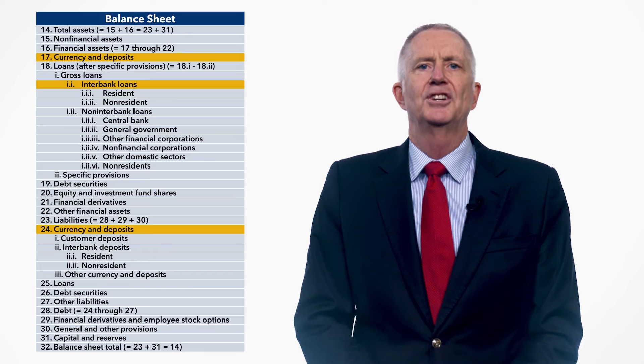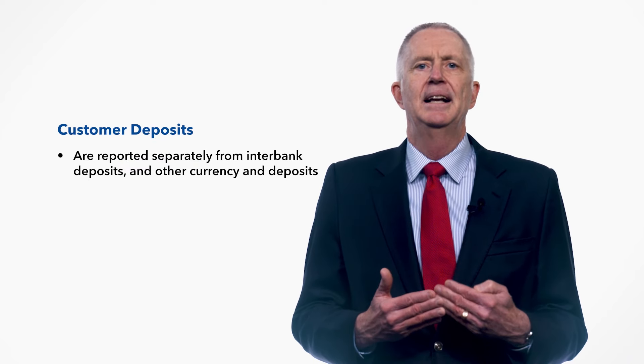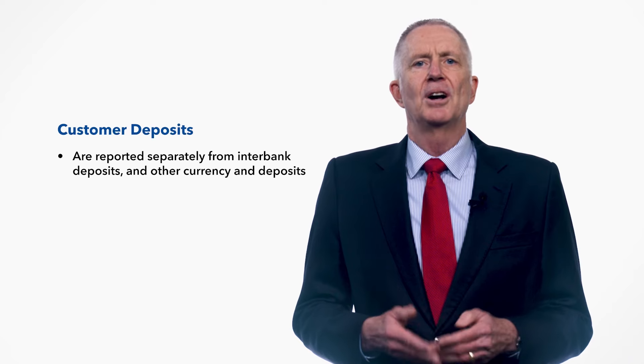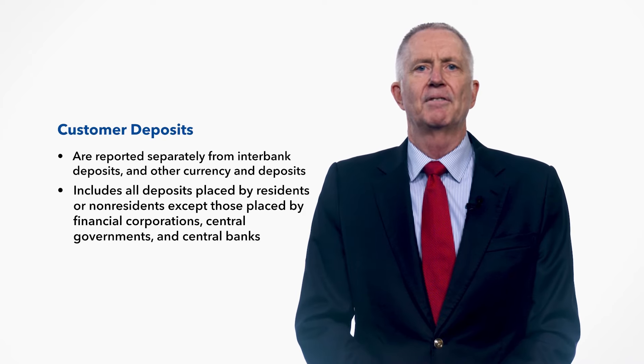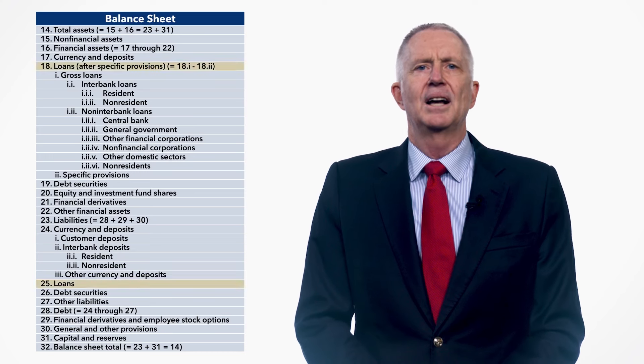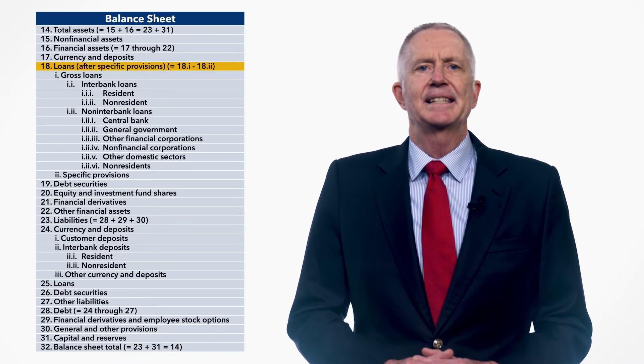Deposit liabilities, line 24, are usually the largest funding source for deposit takers. Customer deposits, which are generally considered to be more stable than other types of funding, are reported separately from interbank deposits and other currency and deposits. Customer deposits includes all deposits placed by residents or non-residents except those placed by financial corporations, central governments, and central banks. Loans, lines 18 and 25, are financial assets created when a creditor lends funds directly to a debtor and are evidenced by documents that are not negotiable. Not negotiable means that legal ownership cannot readily be transferred from one unit to another by delivery or endorsement. Loans are typically the largest single asset class for deposit takers.